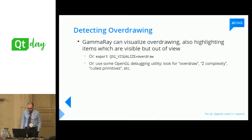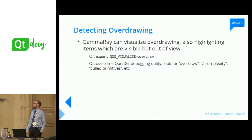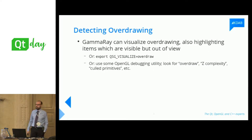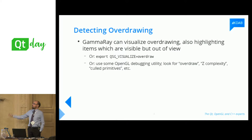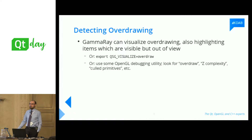If you don't use GammaRay, there are another couple of options. You can export an environment variable for the same effect. The difference is that with the environment variable, your entire application runs in overdraw visualization mode, so you need to navigate without seeing your application properly. Or, if you're good at OpenGL, run an OpenGL debugger or profiler and look for statistics like overdraw or Z-complexity — how many times a given pixel was rendered — and draw call counts per frame.